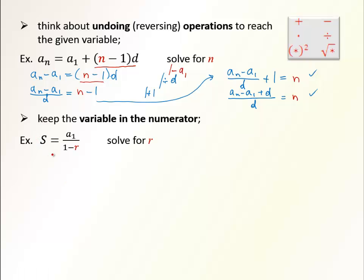In the following example, we have the variable in the denominator. That's not a good position. We wish to have the variable in the numerator. So keep your variable in the numerator. How to do that? Well, let's multiply the whole equation by the denominator. Multiply everything by (1 minus r) to bring it to the other side into the numerator. So what we end up with is S times (1 minus r) equals a₁.